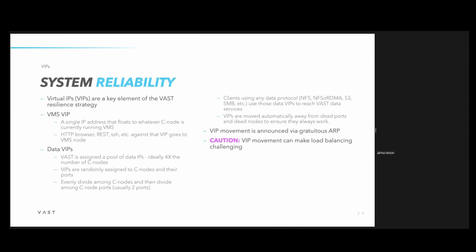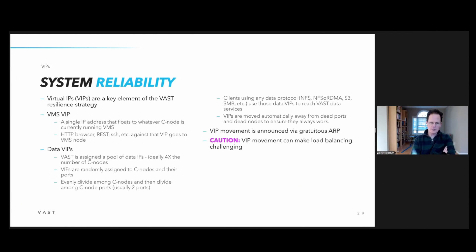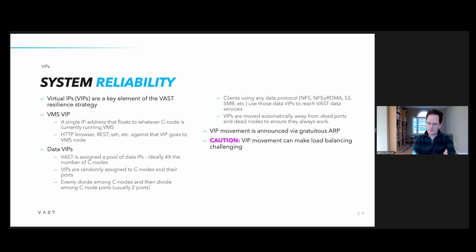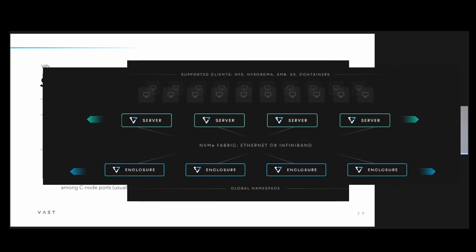Another element of the VAST reliability puzzle is virtual IPs, which are basically IPs that move around. In VAST we have two kinds of virtual IPs: the VMS IP, which is a single IP address that runs on whatever C-node it happens to be on, and if that node should fail, the VMS IP is moved to another node.